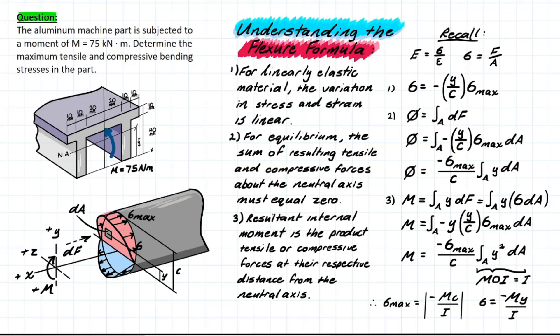Now, the second condition for the flexure formula is based on another concept that we already understand. And that is for equilibrium, the sum of resulting tensile and compressive forces about the neutral axis must equal zero. So looking at the numerical theory for this and thinking about this simply, we understand that if we wanted this entire section to represent zero, the compressive forces will act one way and the tensile forces will act the other. And if they're the same magnitude and opposite directions, they will come out to zero.